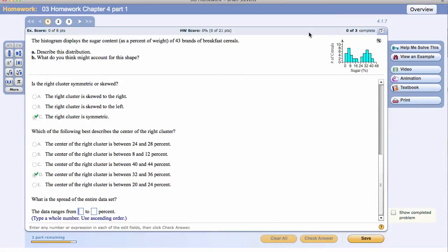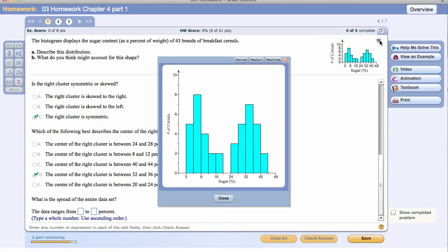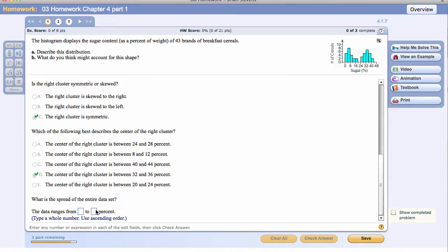What is the spread of the entire data set? Now it's interesting. We can't get an exact number for this, but we can get an estimate. It goes from about 0 to 44. Because we do not know if it goes all the way to 0 or all the way to 44. And technically it can't even because the bin ends at 43.99. With that said, we will assume for this problem that there is data around 0 and there is data all the way up here. So the data ranges from 0 to 44.